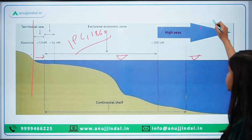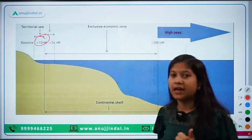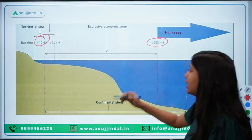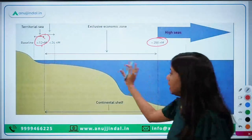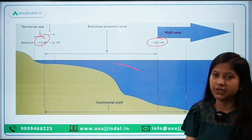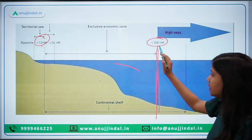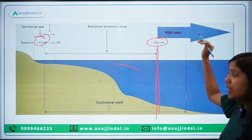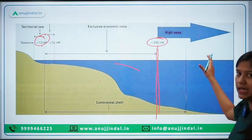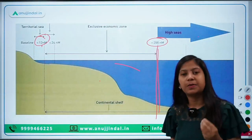Up to 12 nautical miles is the territorial area. From that point onwards, up to 200 nautical miles, we have the Exclusive Economic Zone (EEZ), where all resources and minerals can be utilized by private or government entities. Beyond 200 nautical miles, the high seas begin. The Anti-Maritime Piracy Bill gives India the right to prosecute any person committing piracy even in the high seas. Remember these limits — they can be asked in exams.